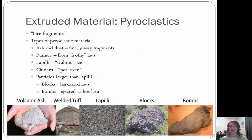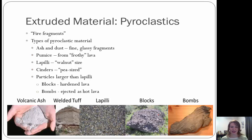More extruded materials are pyroclastics — our fire fragments. There are different types of pyroclastic material: ash and dust, which are fine glassy fragments; pumice from frothy lava; lapilli, which are walnut-sized; cinders, which are pea-sized; and particles larger than lapilli are blocks and bombs. Blocks are hardened lava, while bombs are ejected as hot lava, and those are generally larger than 2.5 inches.